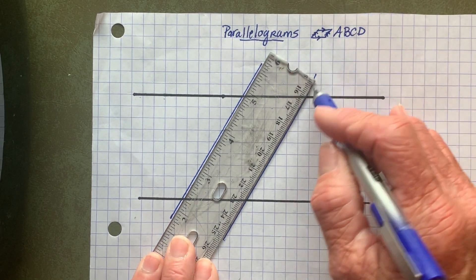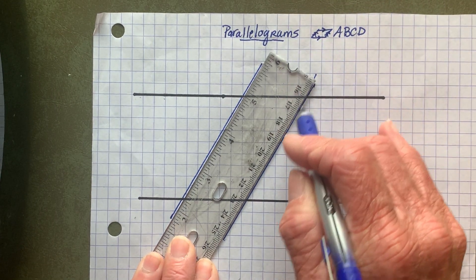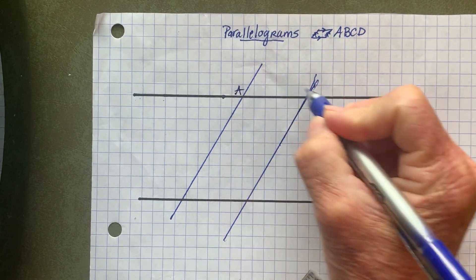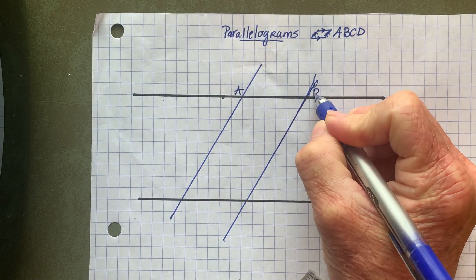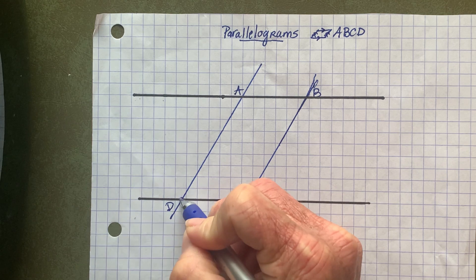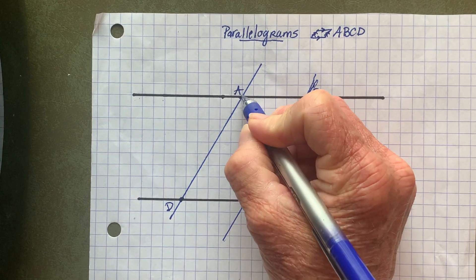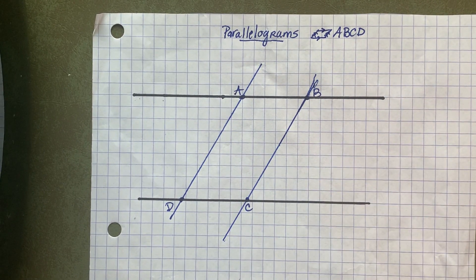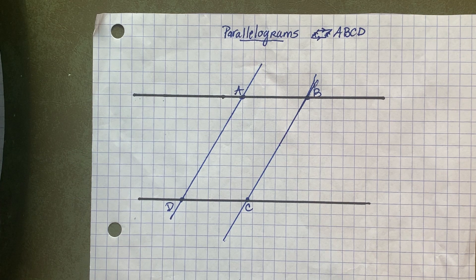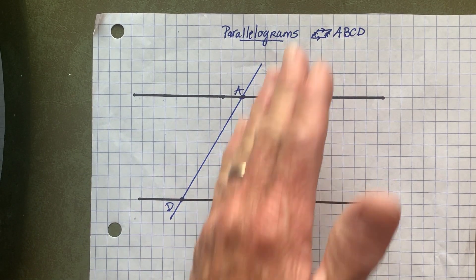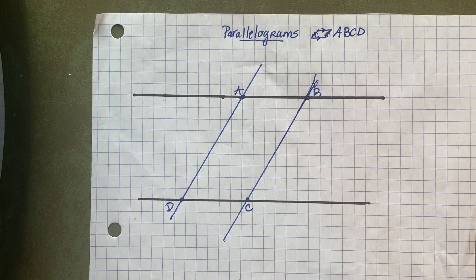Let me help my ruler slip just a little bit. So this is going to be parallelogram ABCD — point D, A, B, and C. And I just want to explore the properties of the parallelogram briefly. So I know the sides run parallel to one another.